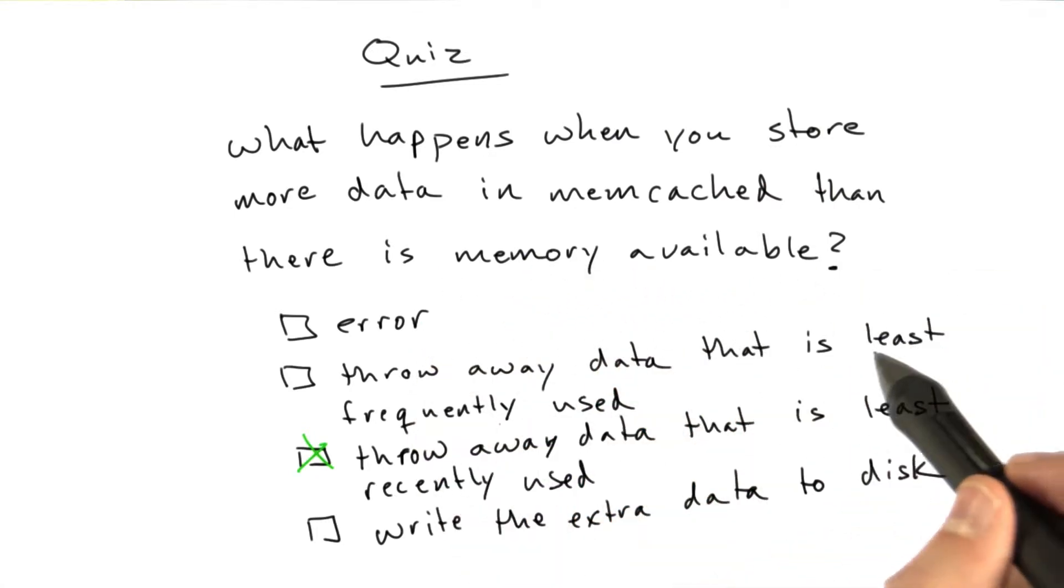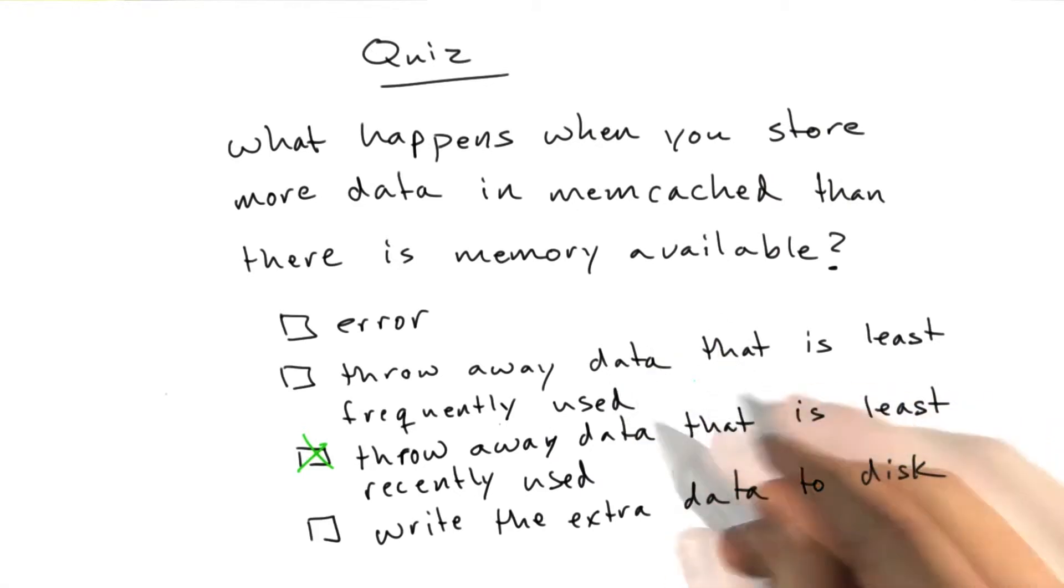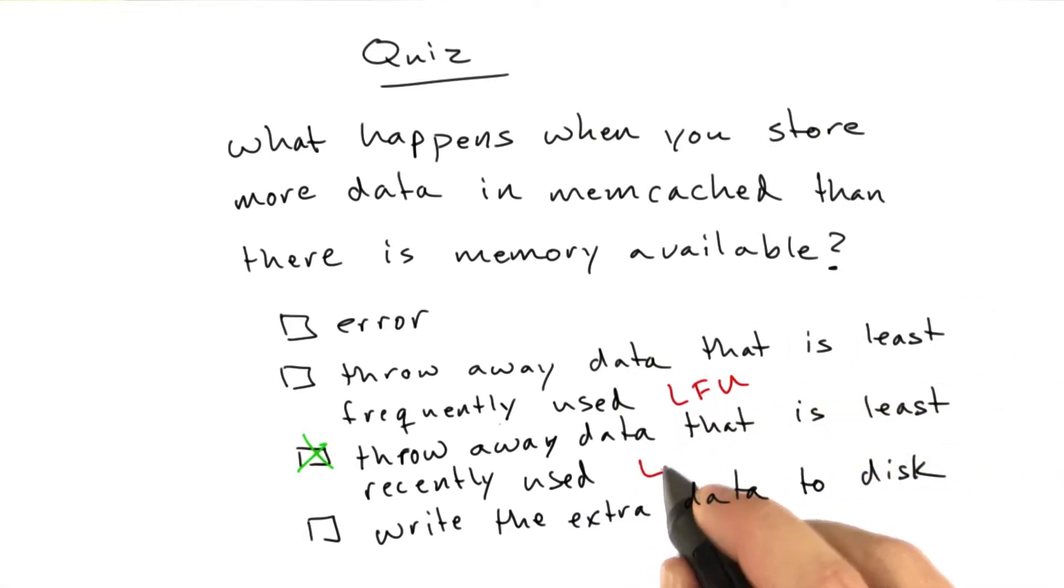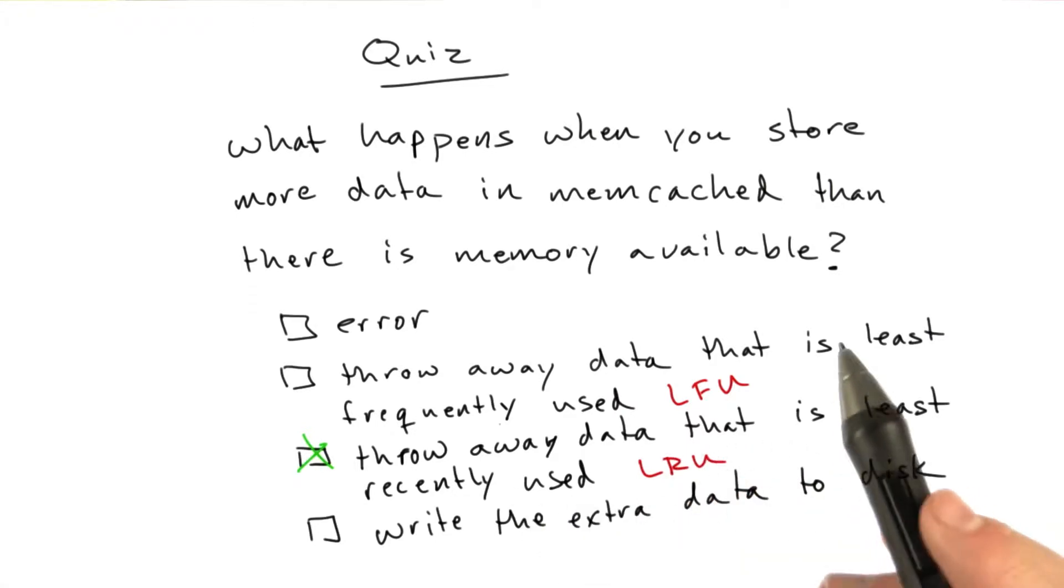The next answer, throw away data that is least frequently used. This is commonly referred to as an LFU cache, least frequently used. This is a common way of doing caches, but Memcached doesn't do it that way. They use what's called an LRU cache, which is least recently used.